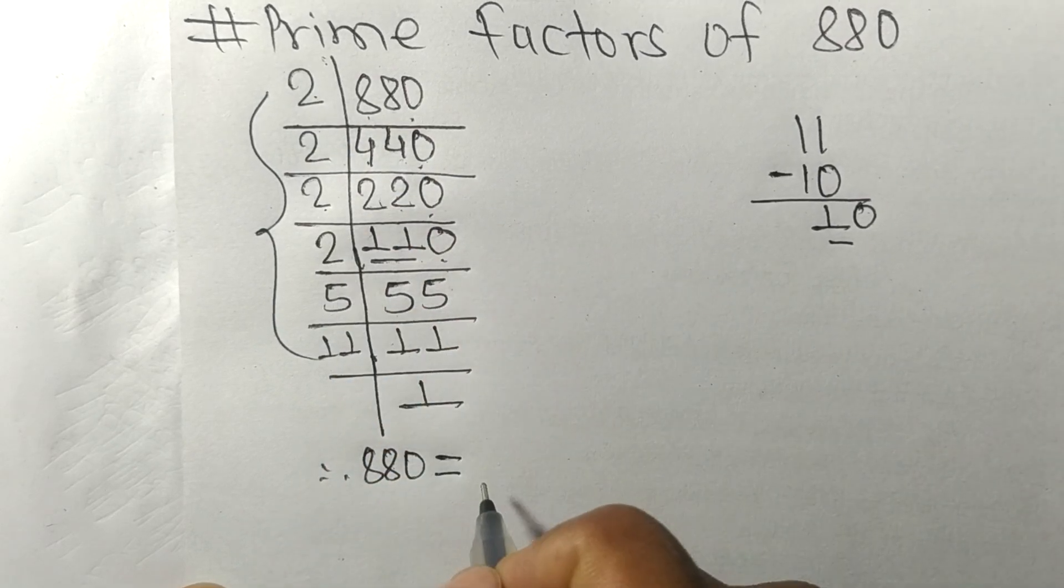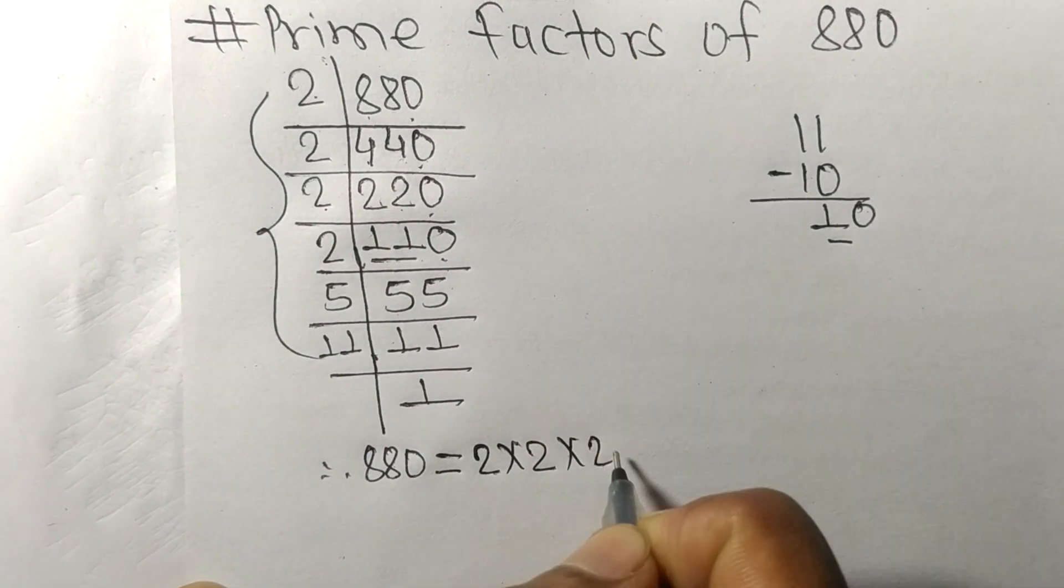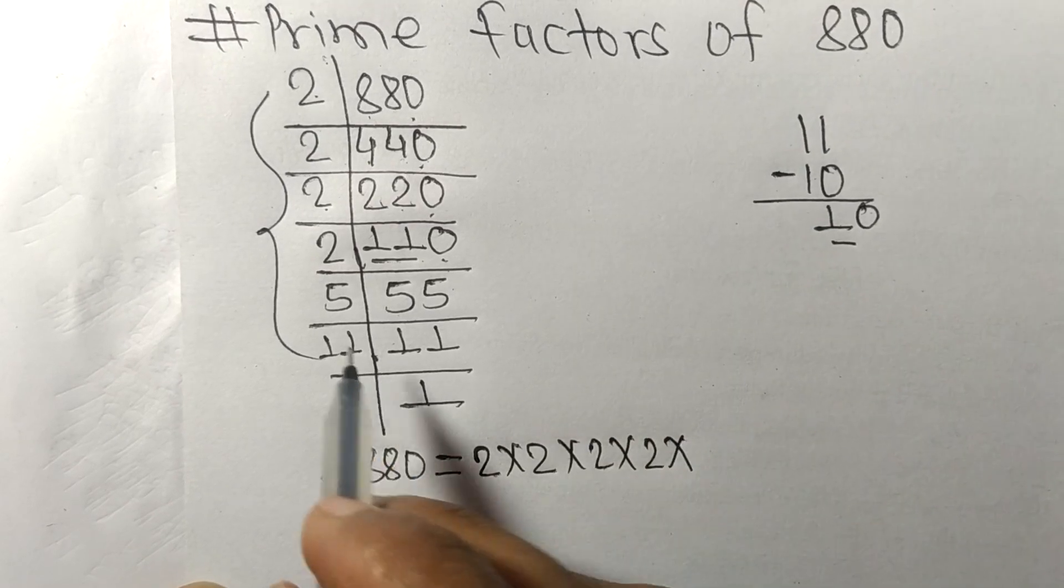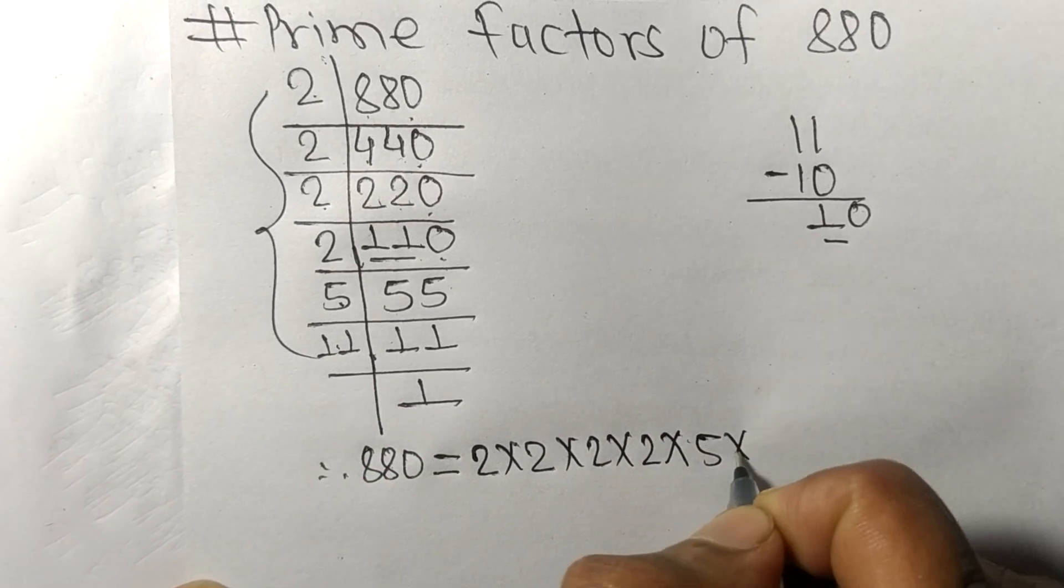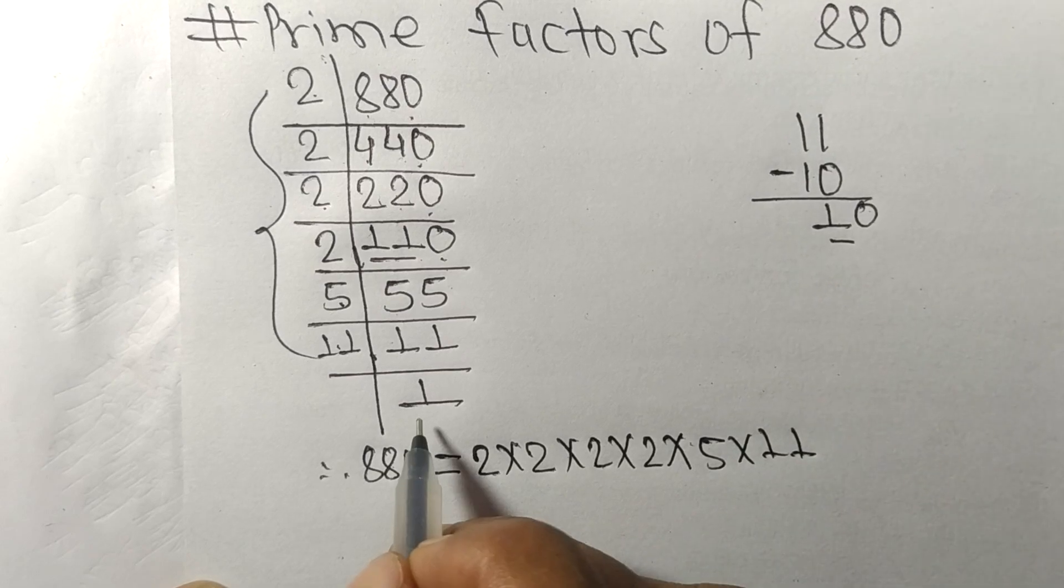So 2, 5, 11, and 1 are the prime factors of 880.